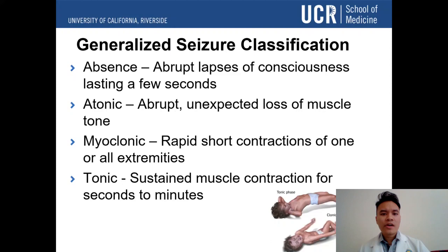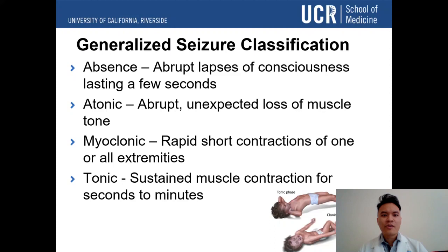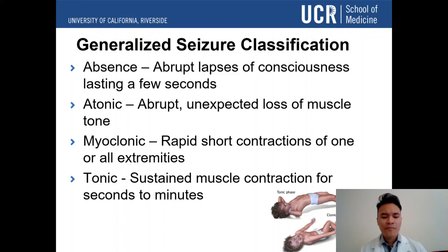When we talk about generalized seizures, there are four main types. Absence is an abrupt lapse of consciousness lasting a few seconds — the child just stares and snaps back, not even realizing it happened. A teacher might think they're not paying attention, but really they're having an absence seizure. Atonic seizures are an abrupt, unexpected loss of muscle tone, where the child may fall because they can no longer maintain muscle tone.